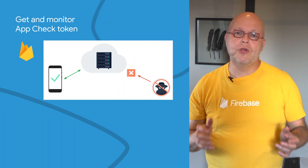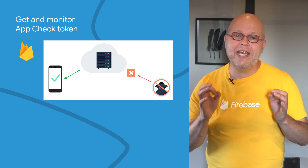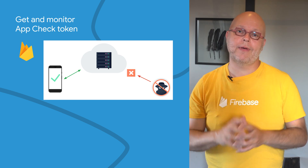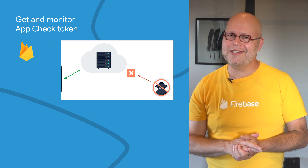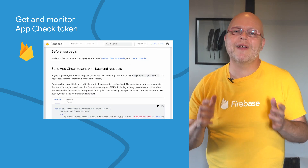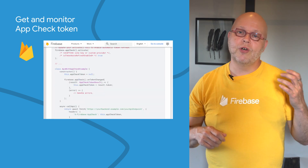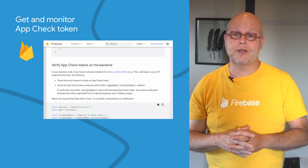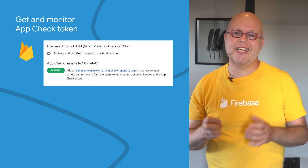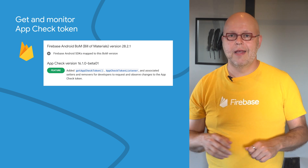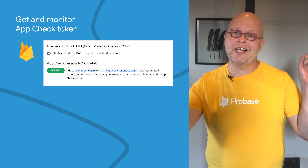Firebase AppCheck reduces abuse of your Firebase real-time database, Cloud Storage, and Cloud Functions by ensuring that only calls that come from your own app are allowed. But you can also use AppCheck to protect your own backend services. To do so, you will need to modify your app client to send an AppCheck token along with each request to your backend, and then modify your backend code to validate that AppCheck token. We've just added new methods to our primary SDKs to get the AppCheck token and to monitor when this token changes. Read the documentation linked below to learn how to implement AppCheck to protect your own backend resources.